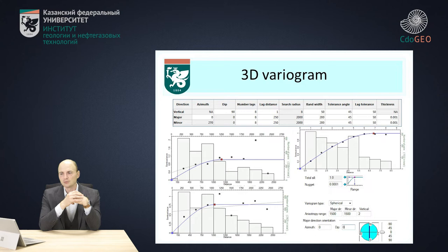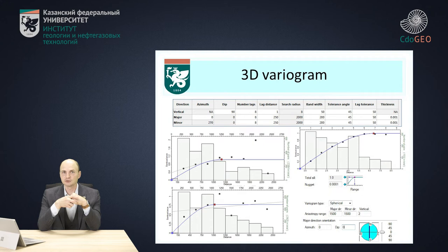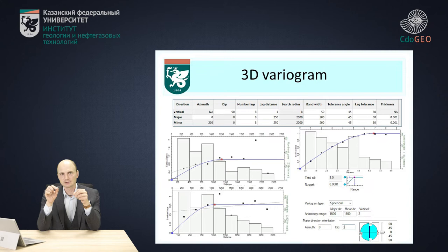What we're going to do: we need to calculate the variogram function in three directions. First is the vertical direction — we're going to find the lag distance and the number of lags to calculate a good experimental variogram, and then we have to approximate it with a good theoretical variogram. After that, we have to calculate the two-dimensional variogram in two directions: major and minor. Again, we find the good experimental variogram and approximate it with a good theoretical variogram.